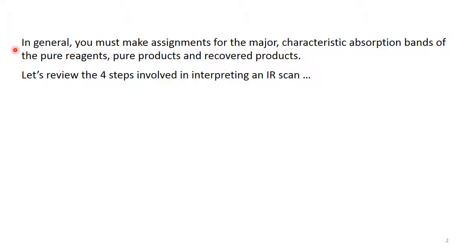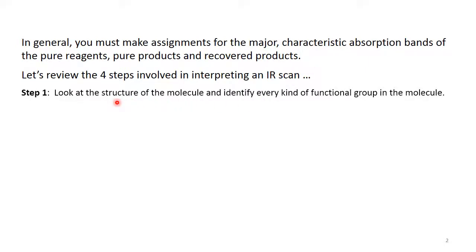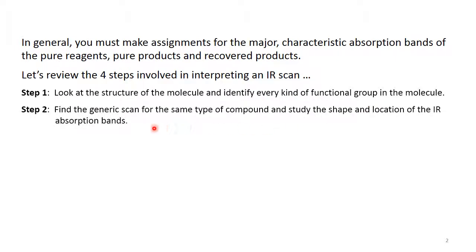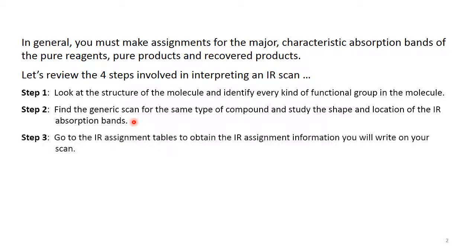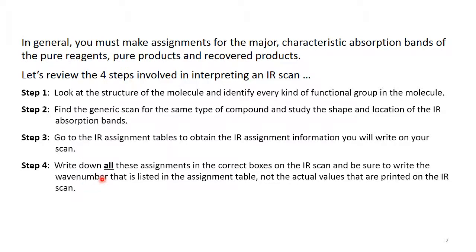In general, you must make assignments for the major characteristic absorption bands of the pure reagents, the pure products, and the recovered products. Step one: look at the structure of the molecule to identify every functional group in the molecule. Step two: look at a generic scan of the same type of compound and study the shape and location of the IR absorption bands. Next, go to the IR assignment table to get the assignment information you will write on your scans. Finally, write all assignments in the correct boxes on the IR scan. Be sure to write the wavenumber listed in the table, not the actual value printed on the IR scan.